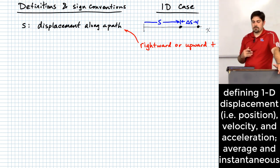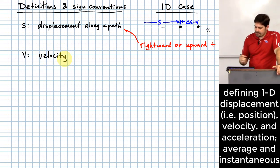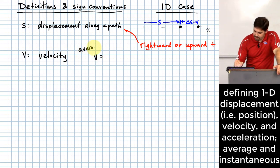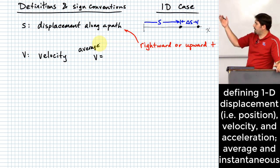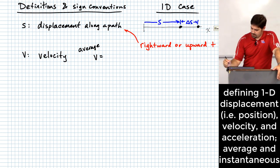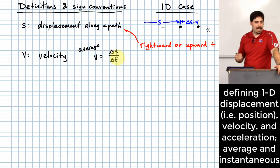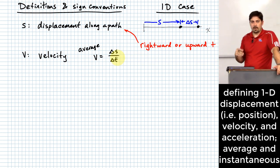The next thing that matters with respect to motion is the idea of velocity. We can define velocity a couple of different ways. One way is as an average velocity. The average velocity is delta s over delta t, where t is time — a change in position given a change in time is just the ratio of those two quantities.